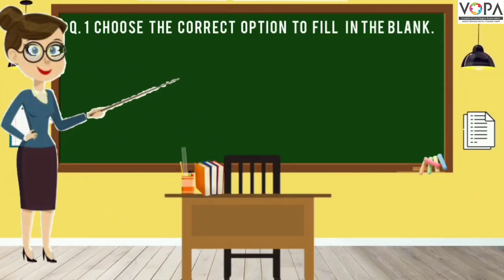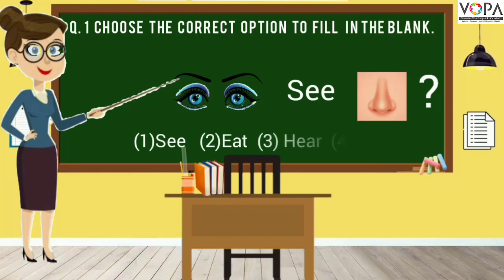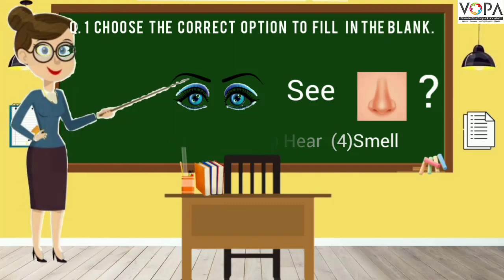Question number 1. Choose the correct option to fill in the blank. I blank with my nose. Option 1: See. Option 2: Eat. Option 3: Hear. And Option 4: Smell.